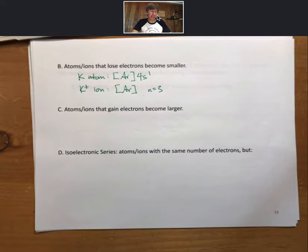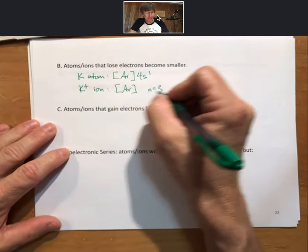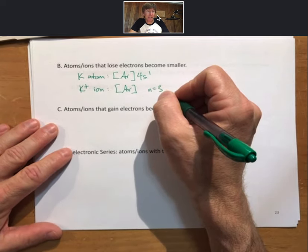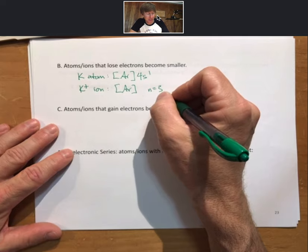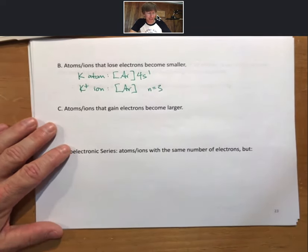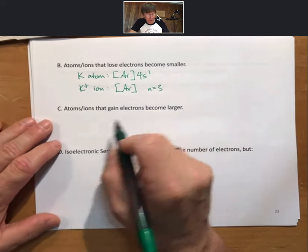Another thing to point out is that the potassium ion, while it has the same electrons as argon, argon does have 8 valence electrons, just all of its valence electrons are now in n equals 3. Now, let's talk about C.